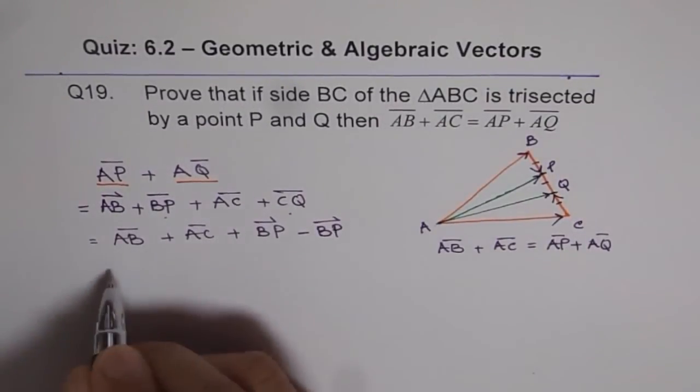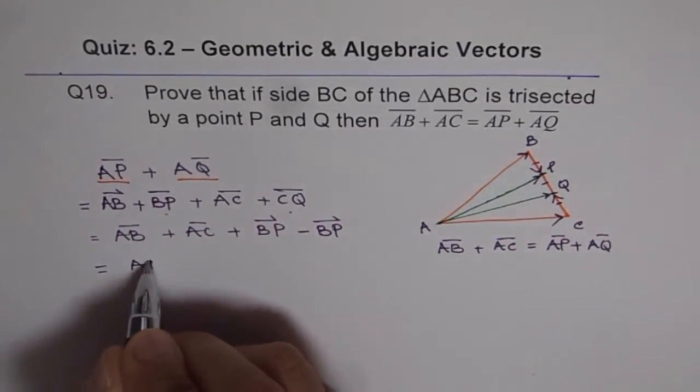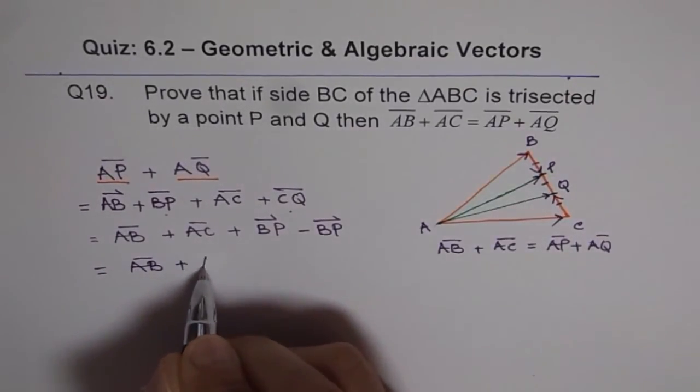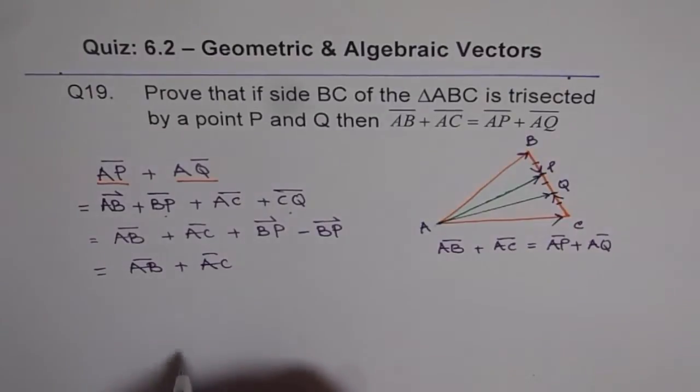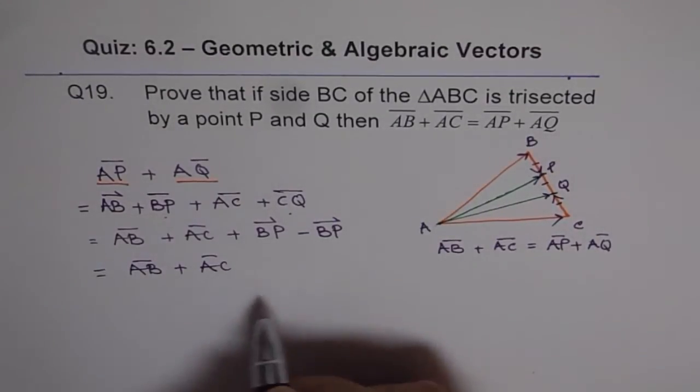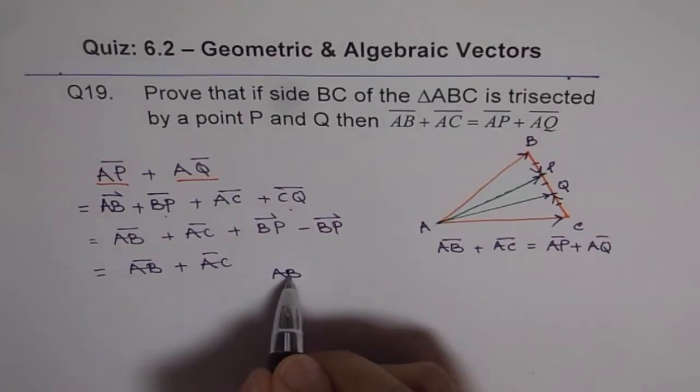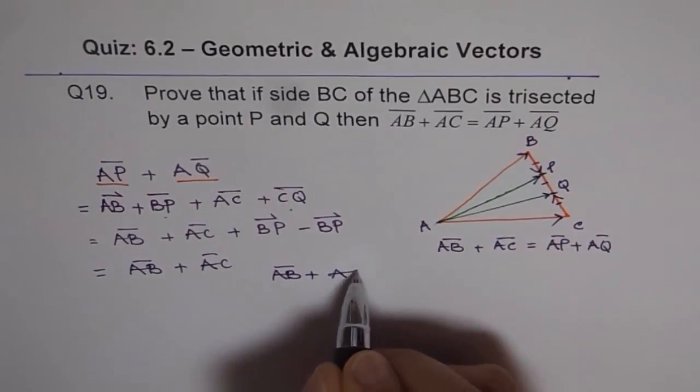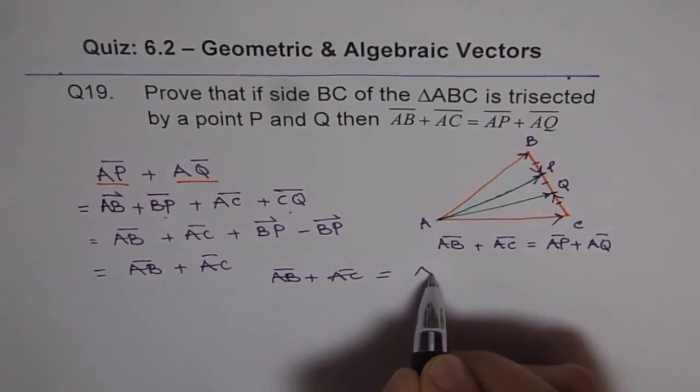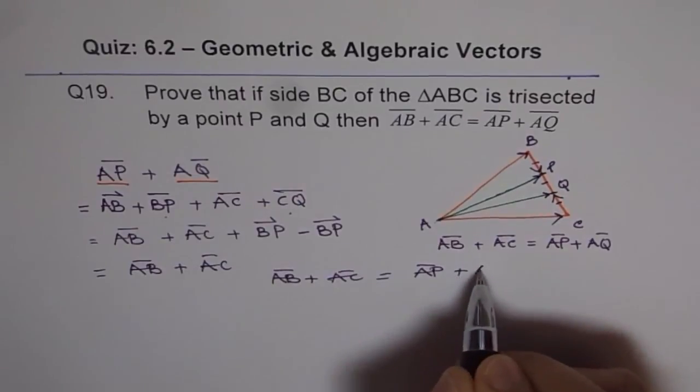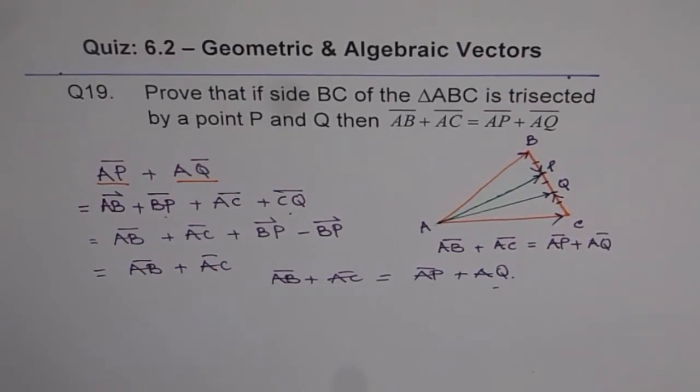And therefore we get AB + AC on this side. And this is what we wanted to prove. And therefore we have proved that AB + AC is equal to AP + AQ. So that is the proof for the question. Thanks.